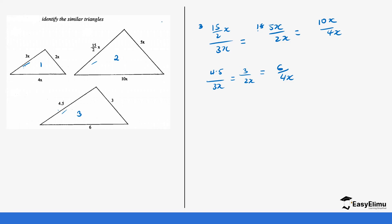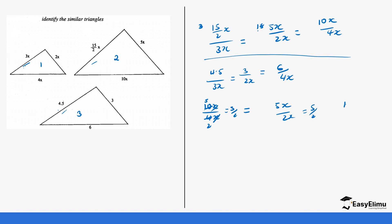If you look at the comparison of triangle 1 and triangle 2, take 10X over 4X — cancel the X's and simplify by 2 — you get 5 over 2. Similarly, 5X over 2X gives 5 over 2. And 15 over 2X divided by 3X is the same as 15 over 2X times 1 over 3, which simplifies to 5 over 2. So triangle 1 and triangle 2 are actually similar triangles.